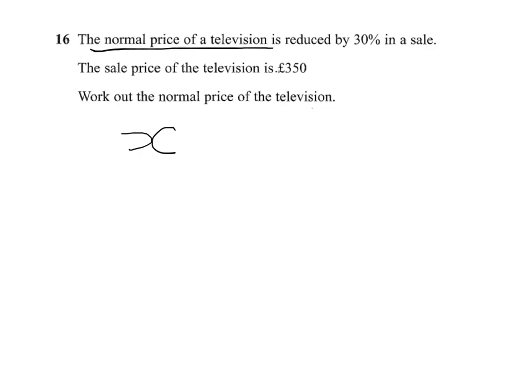We know that when we reduce x by 30% it becomes 350. So if I reduce by 30%, then I multiply by 0.7. If you're not quite sure why I've done that, well remember you have 100% to start with, take off 30% is 70%, and 70% is 70 over 100, which is 0.7.